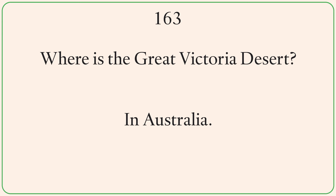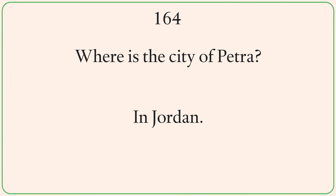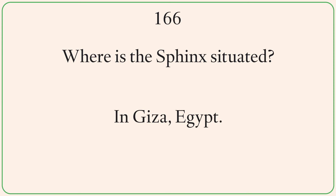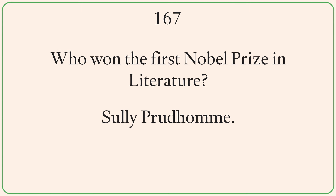Where is the Great Victoria Desert? In Australia. Where is the city of Petra? In Jordan. Who was the first Secretary General of the United Nations? Trygve Lie. Where is the Sphinx situated? In Giza, Egypt. Who won the first Nobel Prize in Literature? Sully Prudhomme.